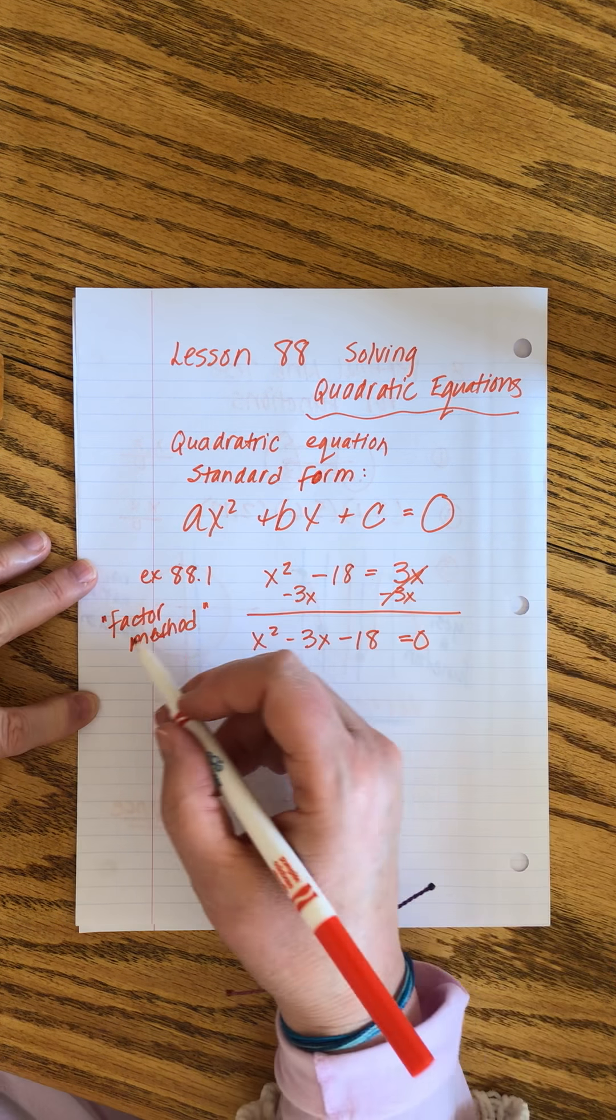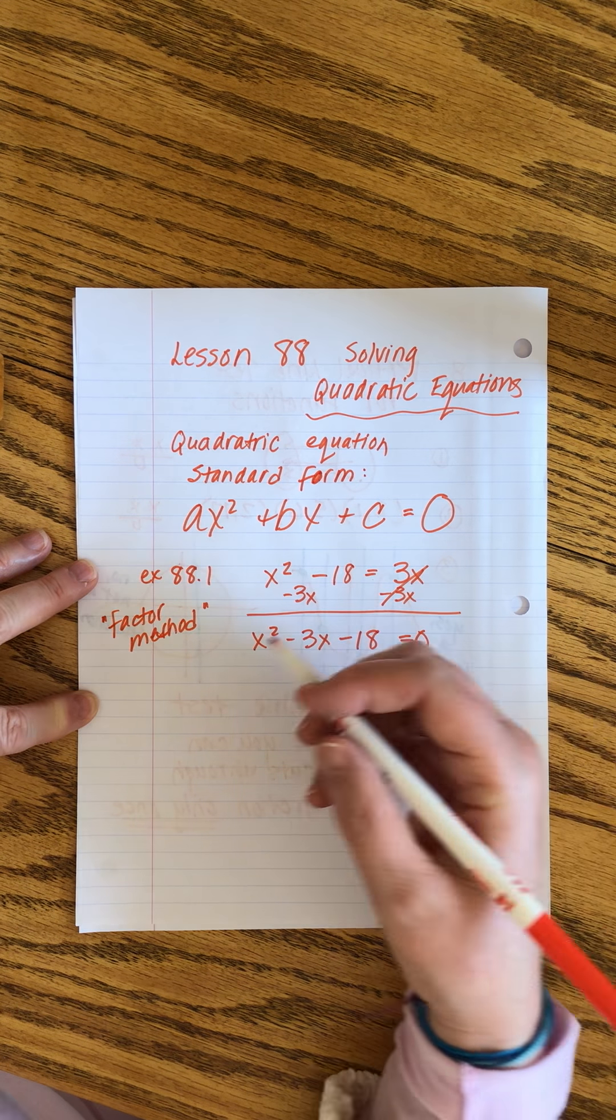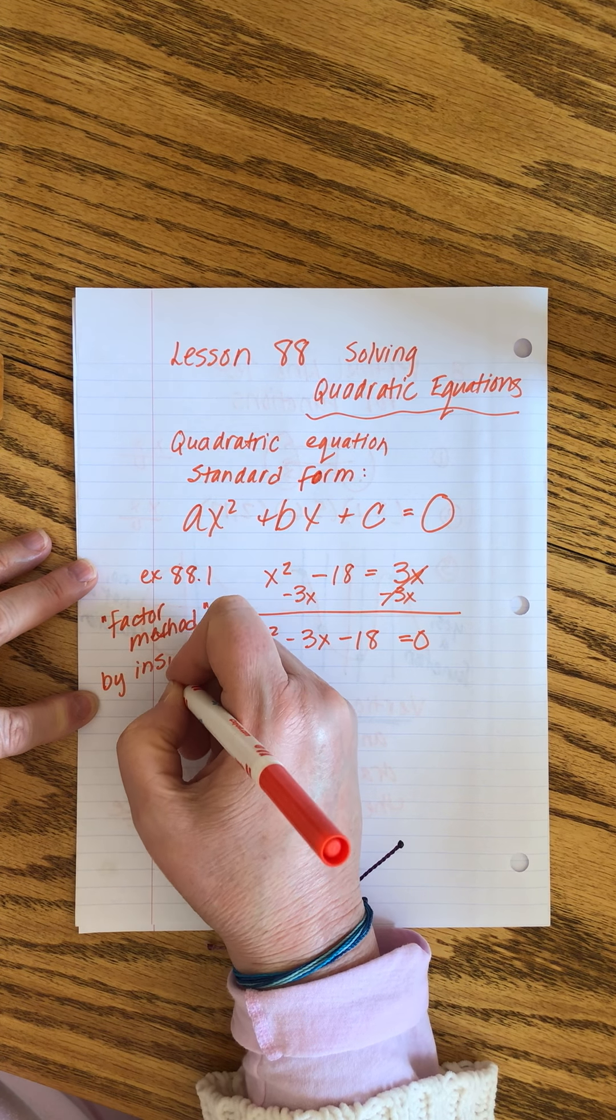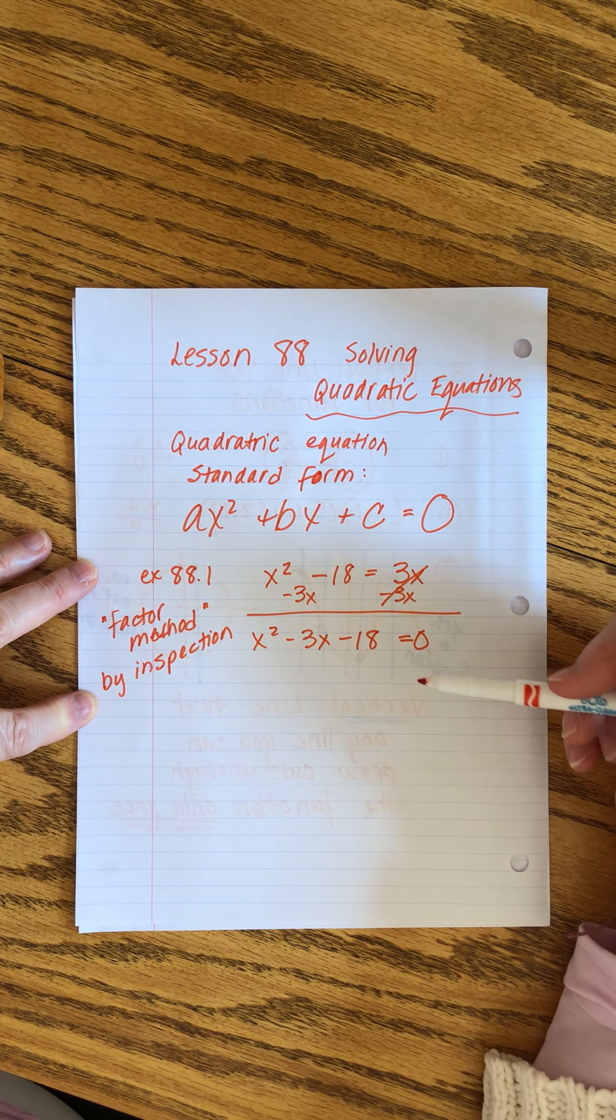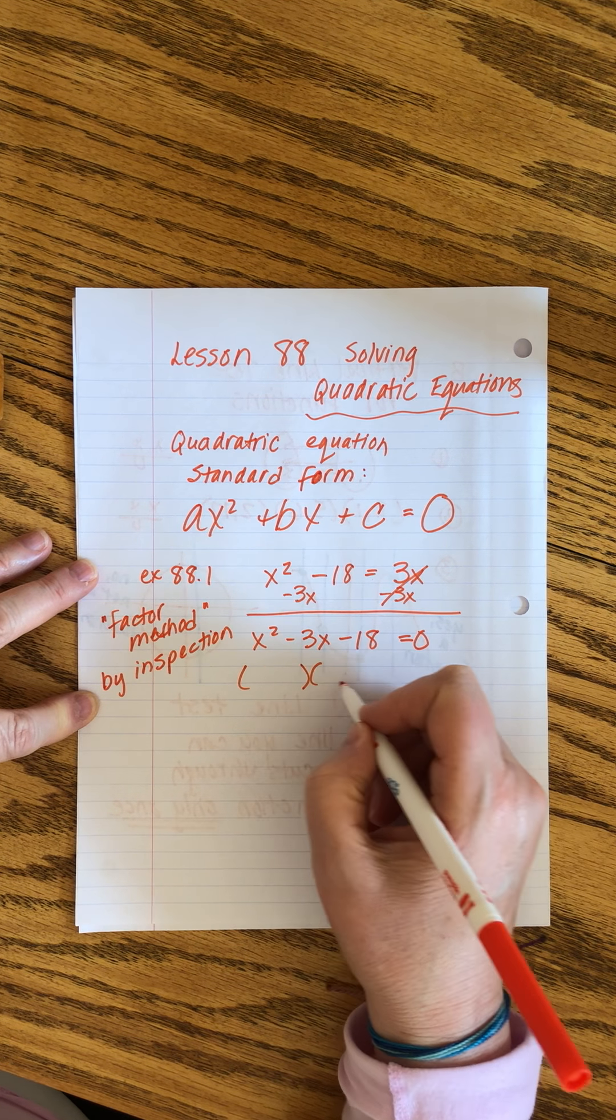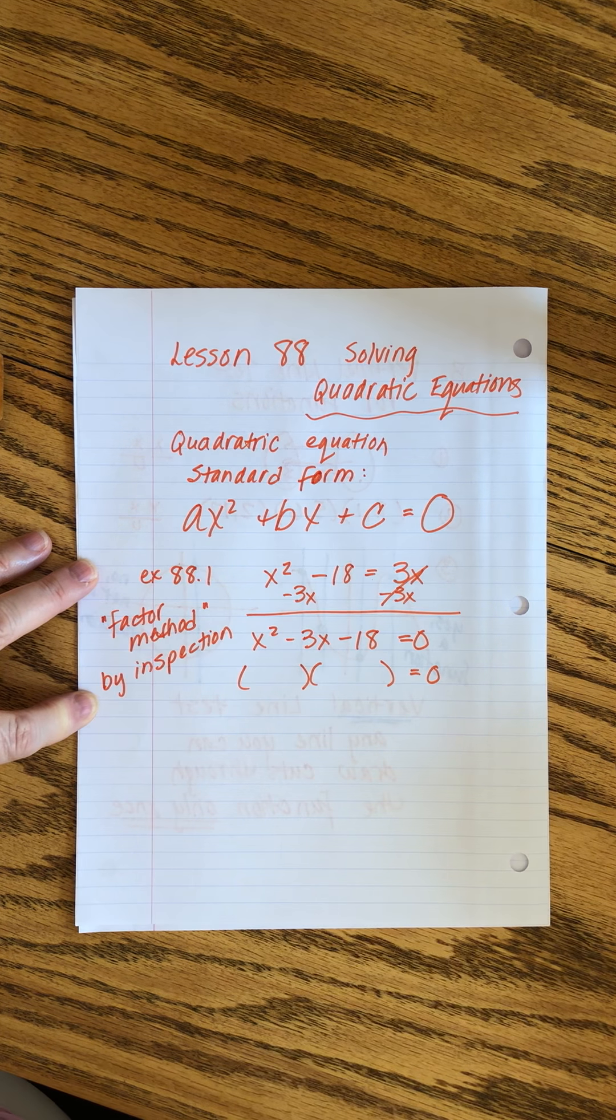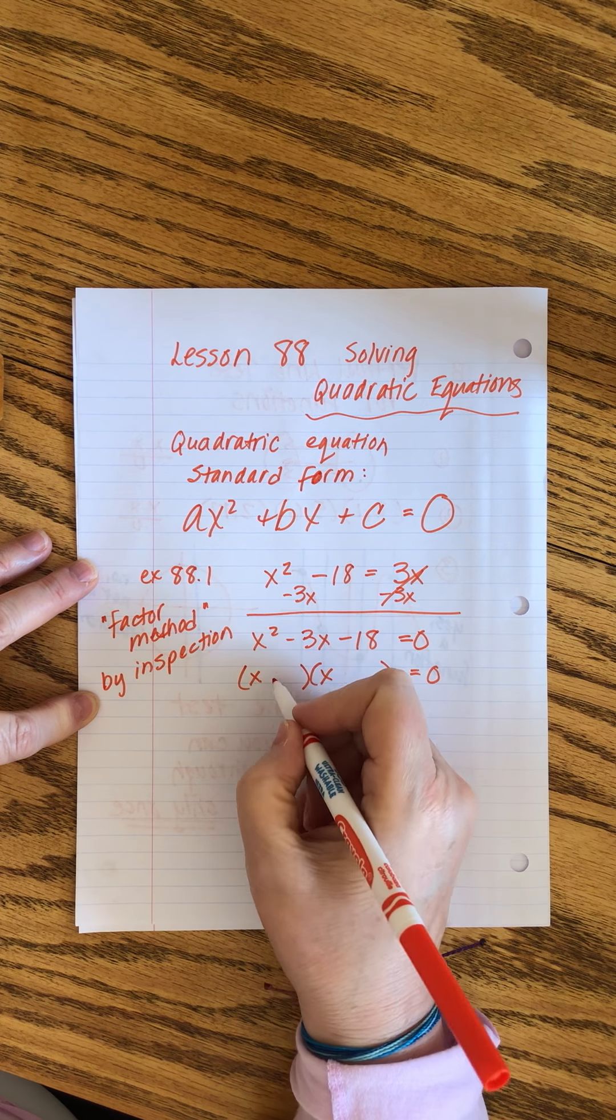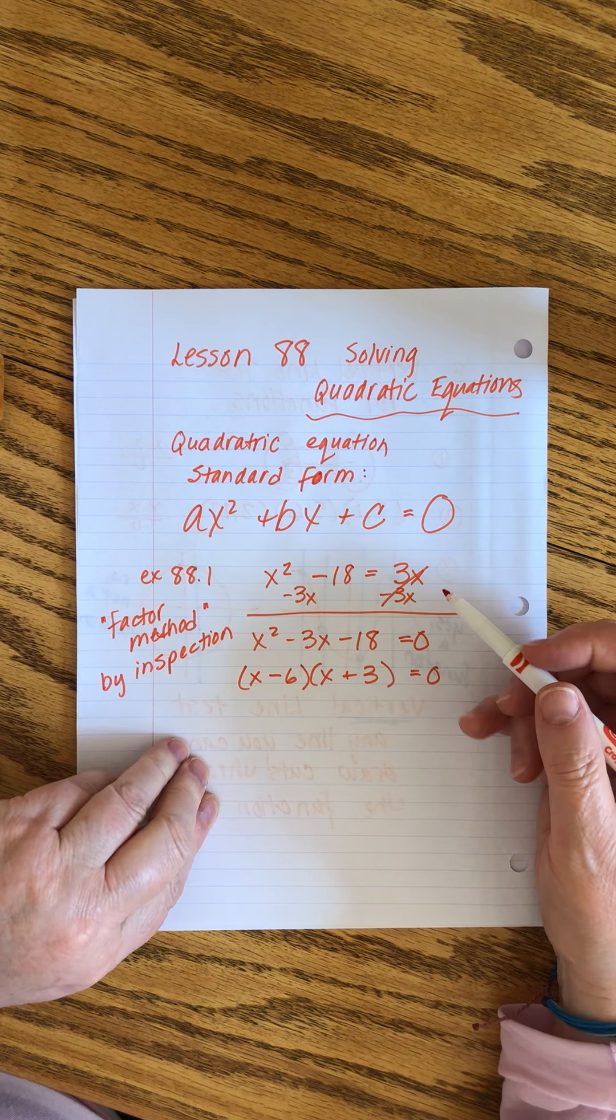He means what I say by inspection. We just look at it. So what that means is you don't have to use the man-eating dragon. Two numbers that multiply to this and add to that. I think 6 and 3 is the way to go. And it's going to be minus 6 and plus 3.